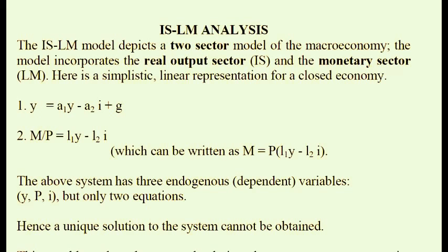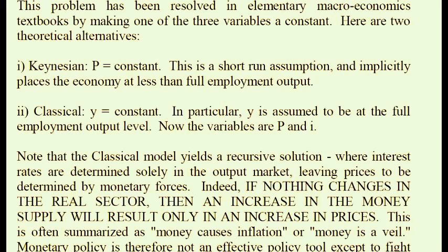If prices are allowed to be endogenous, we have three endogenous variables and two equations, so there's no unique solution. To get a unique solution, various theories have chosen to make Y relatively constant — that's classical theory — or make P constant — that's Keynesian theory. The two easy alternatives are the Keynesian assumption of constant prices and the classical assumption of constant output. These variables are not exogenous per se but relatively exogenous, determined outside of the system.